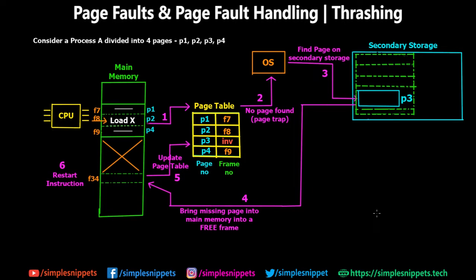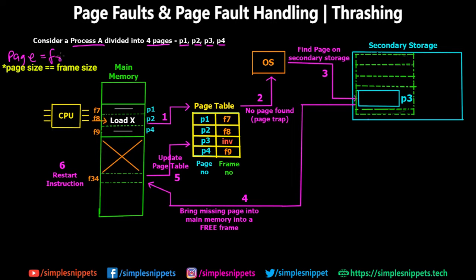Assuming that you already know what paging is, let us consider that we have a process called process A and it is divided into 4 pages: P1, P2, P3, and P4. Since process A is very big and our page size is small, we have to divide it into 4 pages. In paging, the virtual memory is divided into pages and the main memory is divided into frames, and pages equal frames.